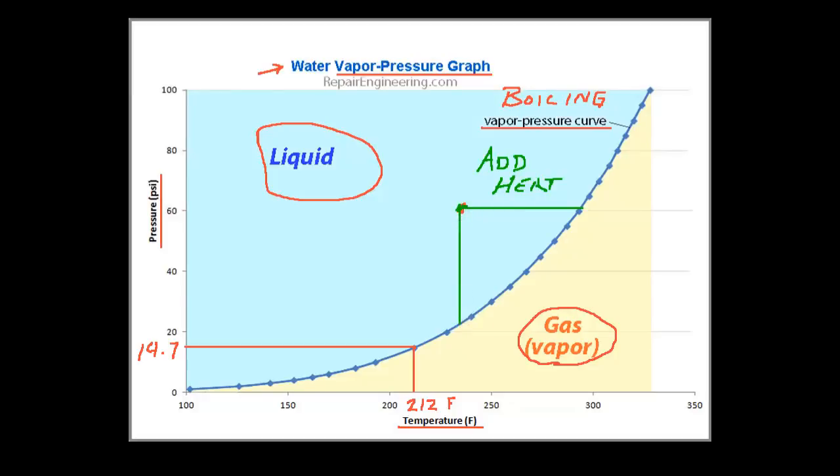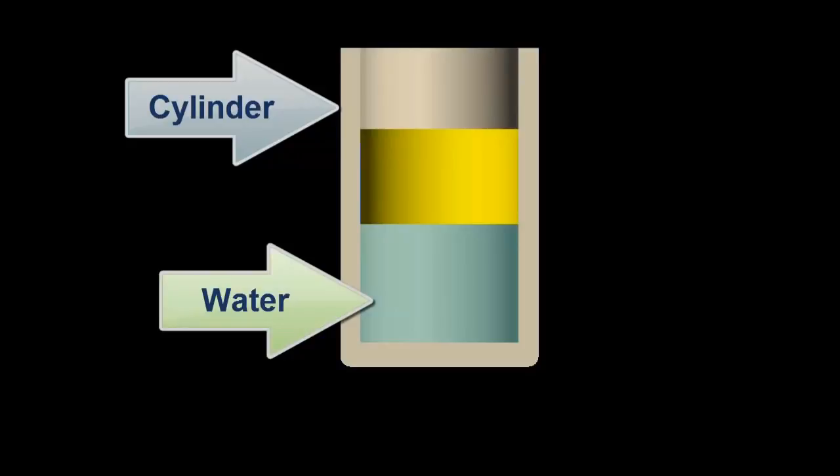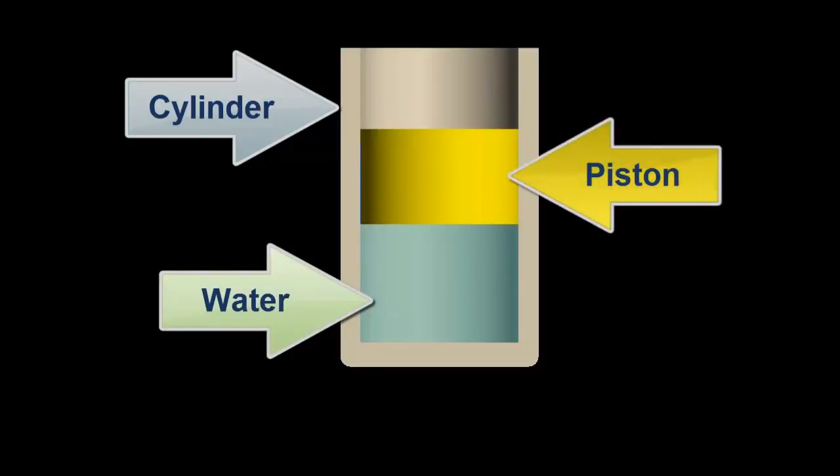Returning again to our earlier animation, we'll see how this process is different from the one that we showed previously. Here, we have the same setup that we had earlier, the same cylinder, water, and piston. Except, in this example, instead of heating the water, we will actually lower the pressure in the cylinder by pulling upward on the piston, like this.